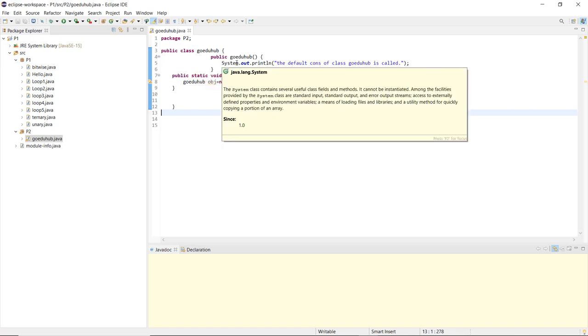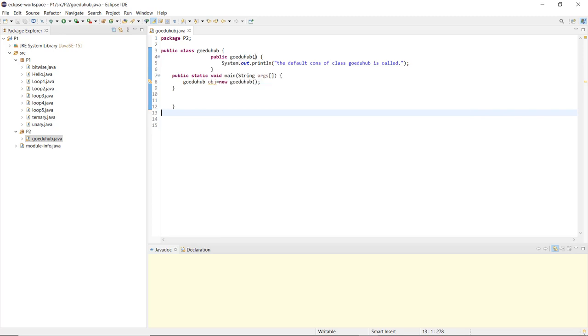Next, I have called a default constructor because it has no parameters. And when this particular constructor is called for object creation, then what is going to print? That the default constructor of class GoEduHub is called.